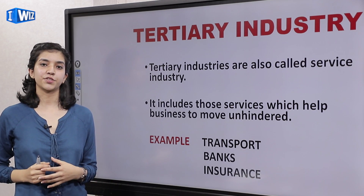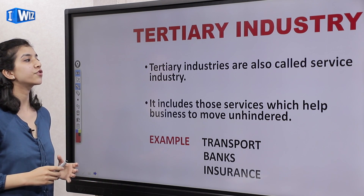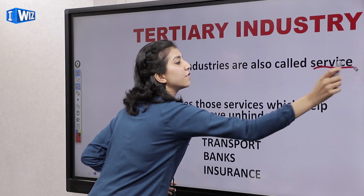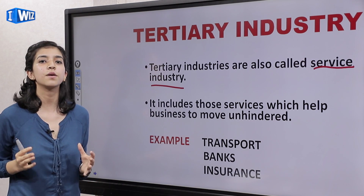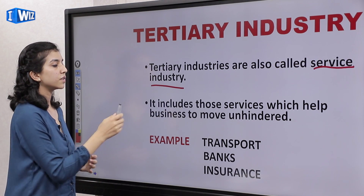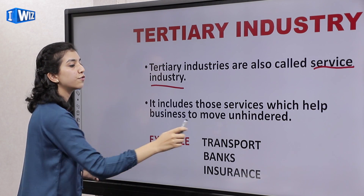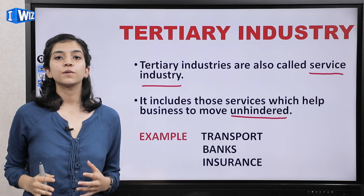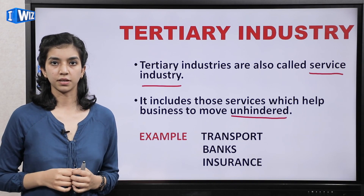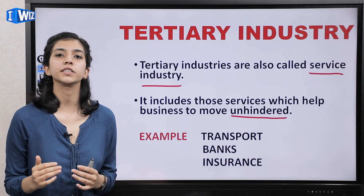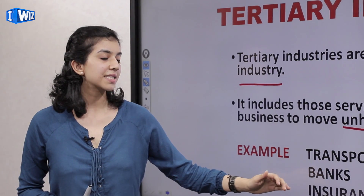Now the question comes to tertiary industry — this is the third type. Tertiary industries are also called service industries. It includes those services which help a business to move unhindered. Hindrance ka matlab hota hai koi barrier ya koi pareshaani create karna, and unhindered ka matlab hai wo pareshaani ya dikkat ko solve karna. For example, transport, banks, and insurance.